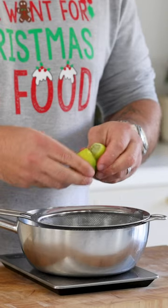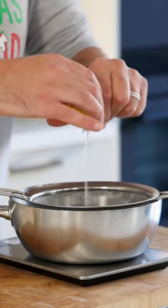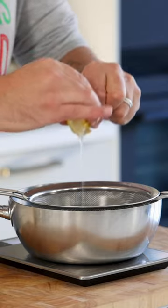Cut six limes in half and juice them for 140 grams of lime juice. Then cut a yuzu in half and juice it for 30 grams of juice. You can use a lemon if you're not able to get yuzu juice.